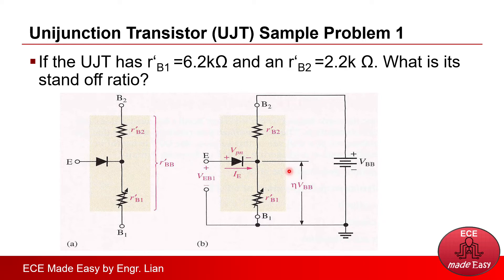So, getting back to this concept, if we apply a voltage supply across the UJT, which is VBB, we can get a voltage drop across the RB1 or the resistor at base 1, and that is equivalent to N VBB.